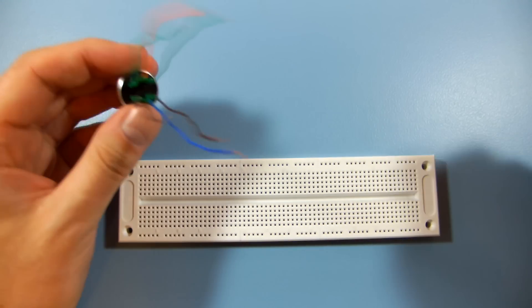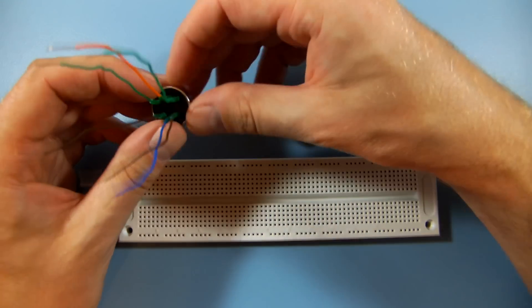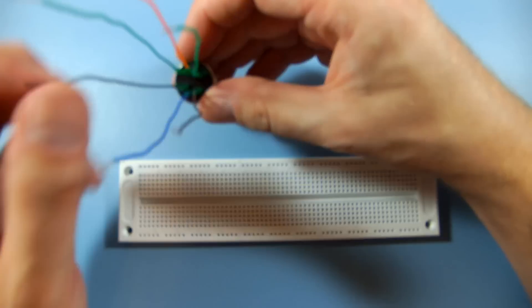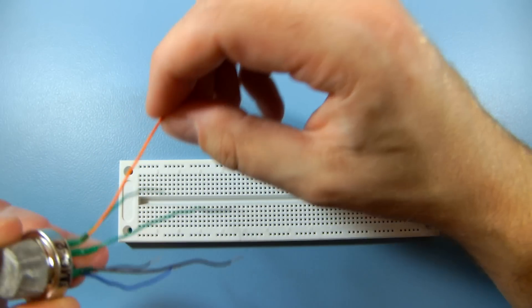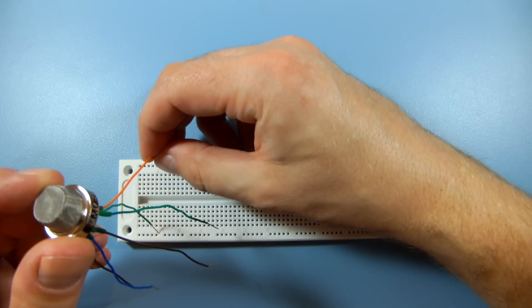Now let's connect the sensor to the breadboard. One of the heater coil wires goes to the positive rail and the other one to ground.